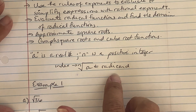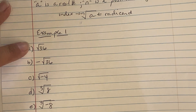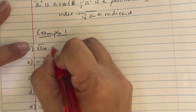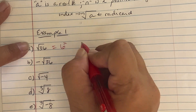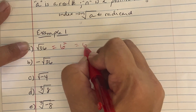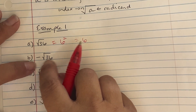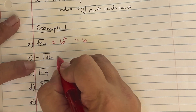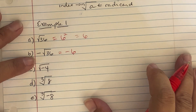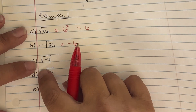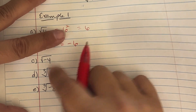In example one: the square root of 36 — you're looking for positive answers. Six squared is 36, so the answer is six. For negative radical 36, the negative is on the outside, so the result is negative six. For the square root of negative four, if you plug this into the calculator it gives an error message — it's not a real number.